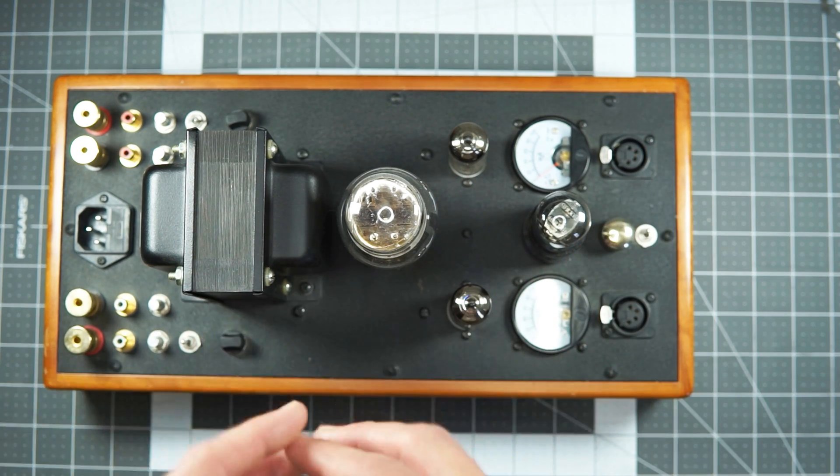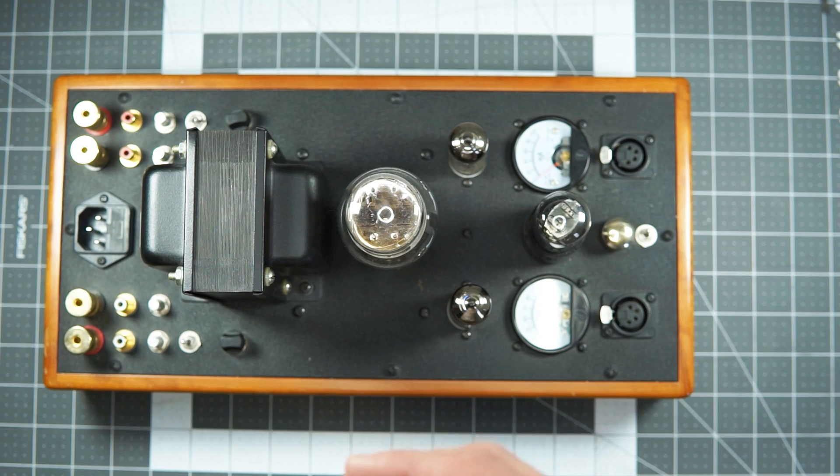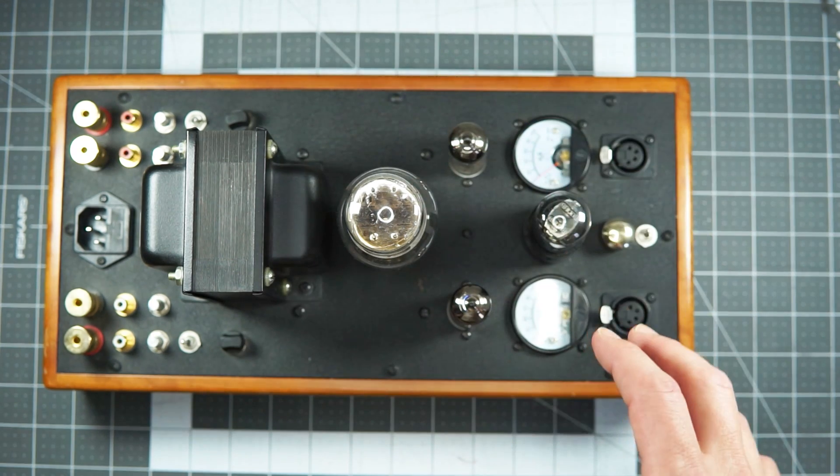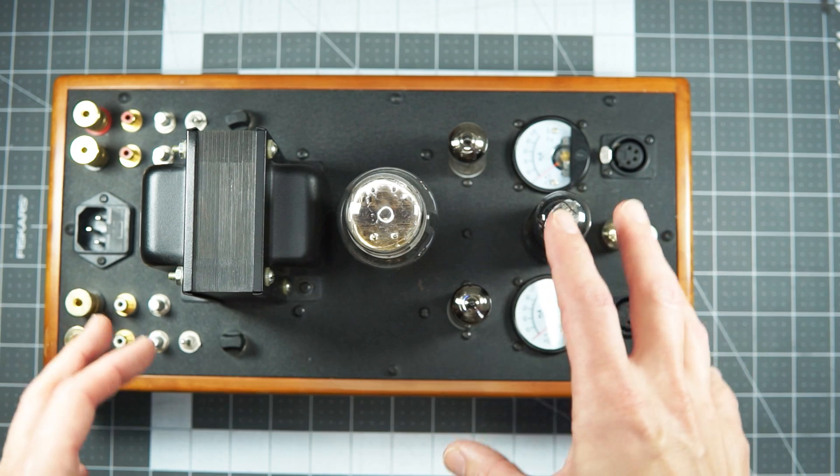In the more common and practical realm of single ended tube amps, you're going to see those, like I said, 2A3s and 300Bs. And these are, what are these, EL86s I want to say.